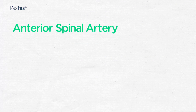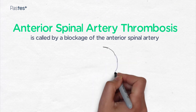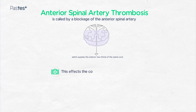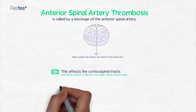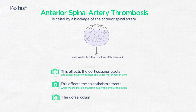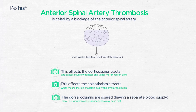Anterior spinal artery thrombosis is caused by a blockage of the anterior spinal artery, which supplies the anterior two-thirds of the spinal cord. This affects the corticospinal tracts and produces severe weakness and upper motor neuron signs below the level of the lesion. The lesion also affects the spinothalamic tracts, which means that below the level of the lesion there is anaesthesia. The dorsal columns are spared, having a separate blood supply, and therefore vibration and proprioception may be intact.